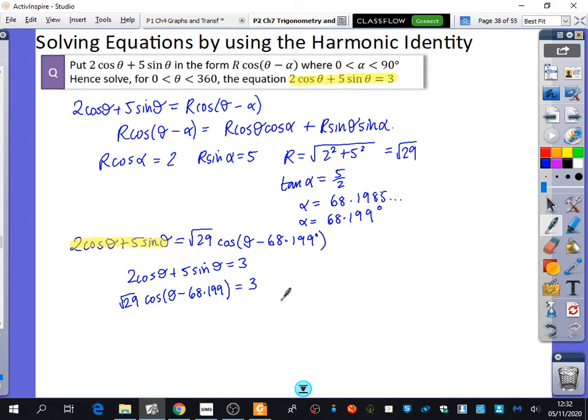Now, it looks messy, but really this is just a cos equation that we've got here. The cos equation, the argument has been changed and it's been multiplied by root 29, but it is literally just a cos equation here.